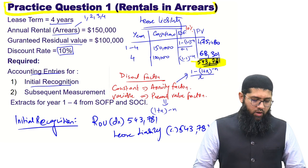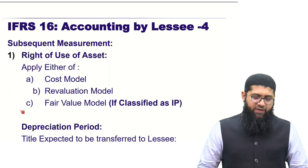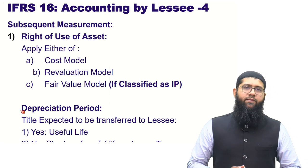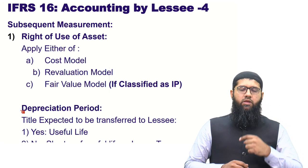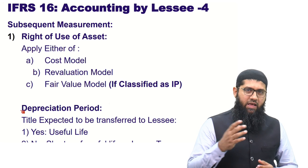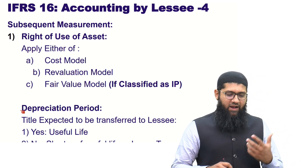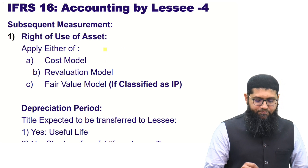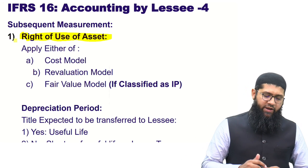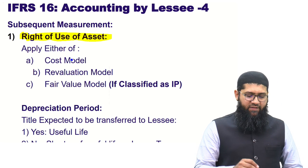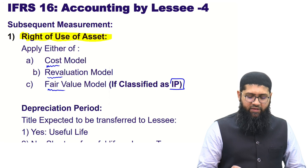Now let's move to subsequent measurement. After initial recognition of the right of use asset and lease liability, IFRS 16 says the right of use asset can be carried using the cost model, the revaluation model, or the fair value model if it is classified as investment property. Under the cost model — as with IAS 16 PPE — the carrying amount is cost less accumulated depreciation less accumulated impairment. Under the revaluation model, it is fair value less subsequent accumulated depreciation less subsequent accumulated impairment, following IAS 16 rules.